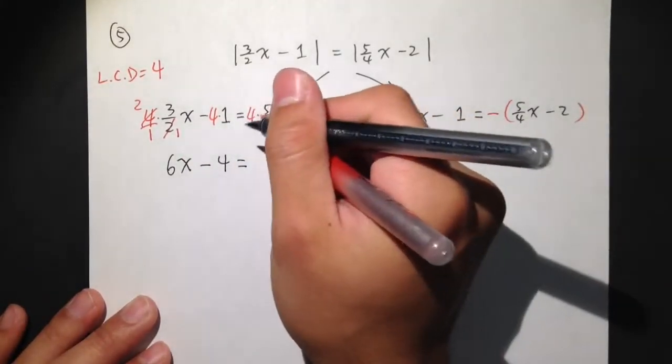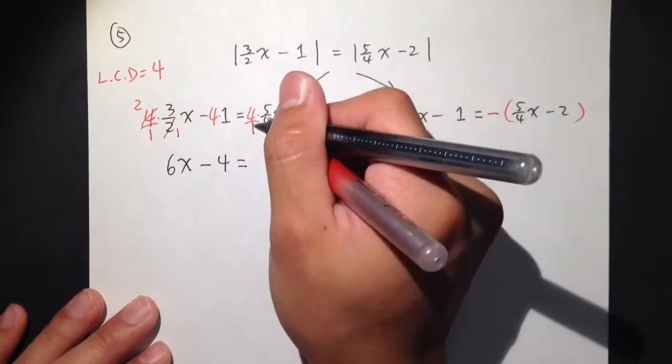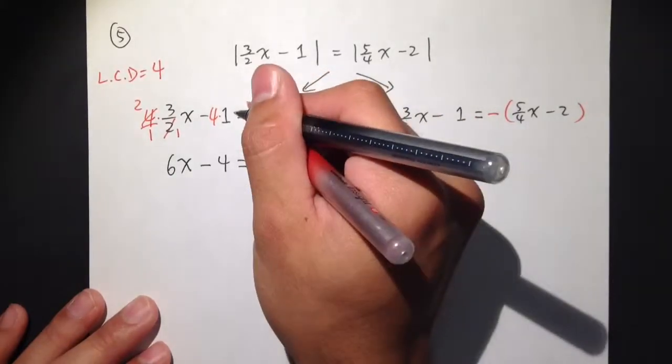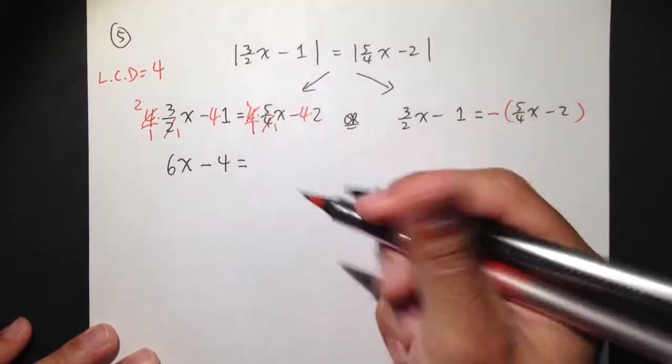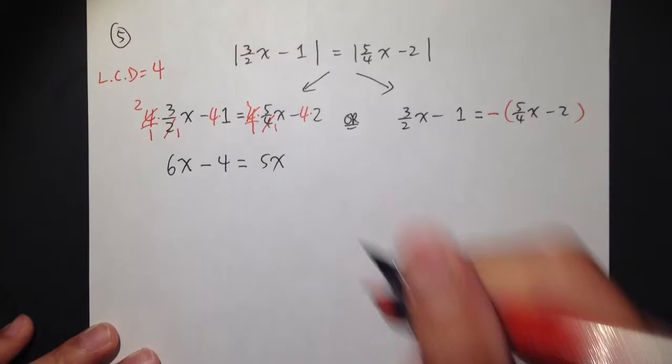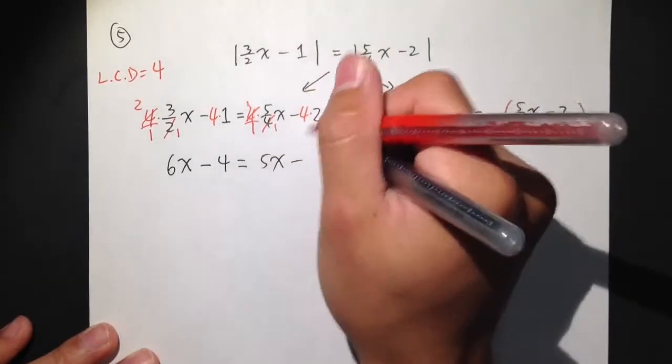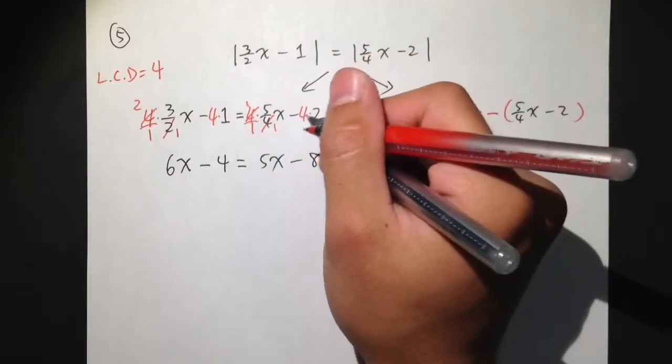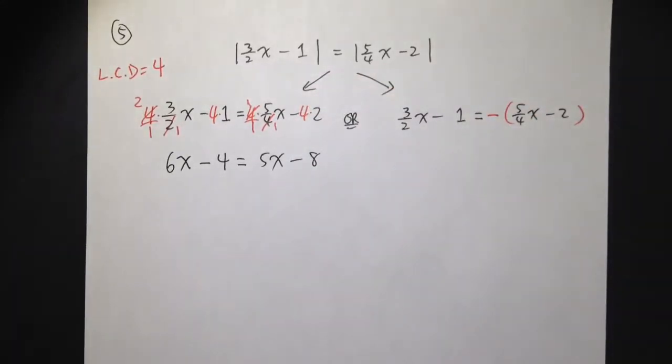Equals to, here I have 4 times 5 over 4. Let's put a 4 as 4 over 1. And this 4 and that 4 cancels, and that's just 1 and 1. 1 times 5 is just 5, so we just get 5x here. And then minus 4 times 2 is minus 8.